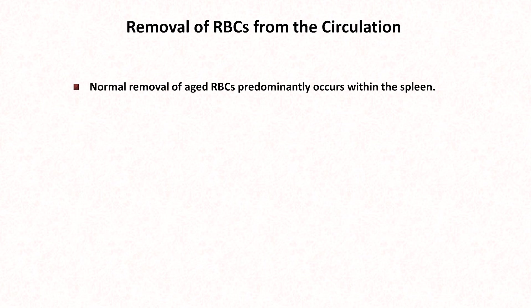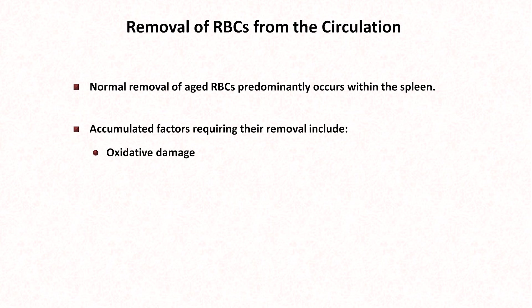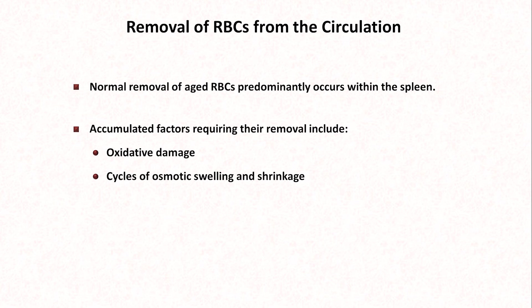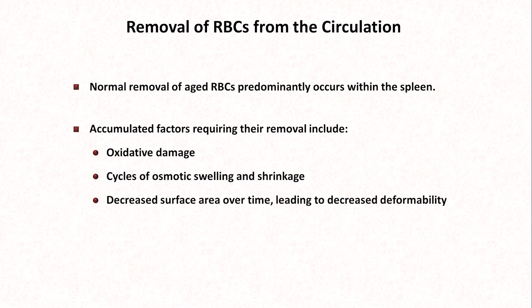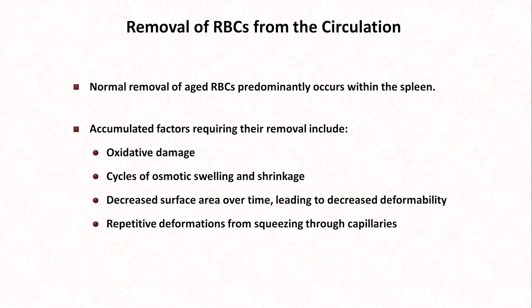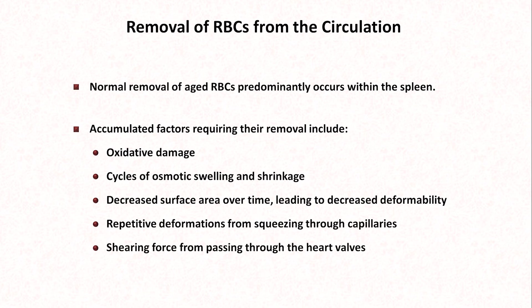Red blood cells don't last forever. Their average lifespan in a healthy adult is about 120 days. When aged RBCs are removed from the circulation, it predominantly occurs within the spleen. But why don't they last forever? Over time, their proteins accumulate oxidative damage. Cycles of osmotic swelling and shrinkage result in cytoskeletal damage, which the red cells have a very limited capacity to repair since they no longer have organelles like ribosomes. They gradually lose surface area over time, leading to decreased deformability. Repetitive deformations from squeezing through capillaries also damage the cytoskeleton, and the shearing forces from passing through heart valves also contribute to cumulative damage.